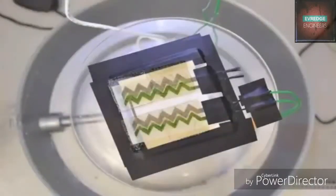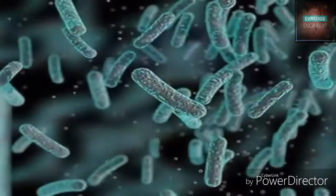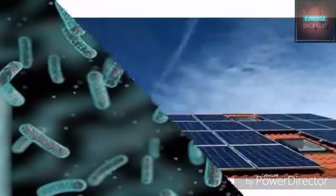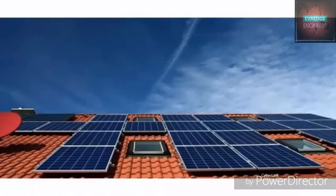Scientists at Imperial College London have successfully used cyanobacteria, bacteria that can convert the energy of light into electricity, to print circuits that can serve as solar cells by using a simple inkjet printer.